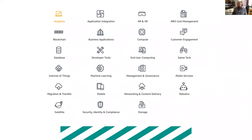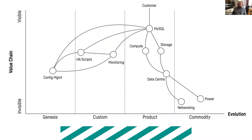Let me give a worked example using a Wardley Map. A Wardley Map shows a value chain on the vertical axis — at the top is the customer, the person you're delivering service to. As you go further down the map you get further away from the customer, and things become less visible to them.